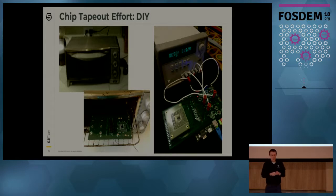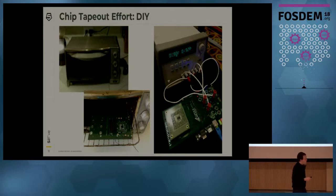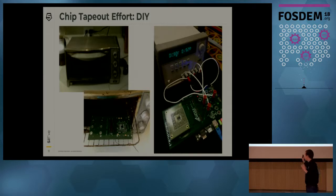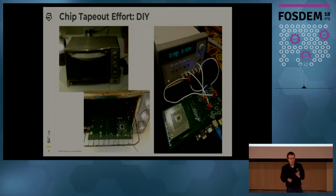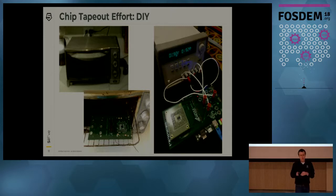You'd turn the oven up a little bit to make it hotter, and when it got too hot you'd open the door a little bit so it'd cool down. We used that to solder the board for EOS 22, which was the first implementation of the final frozen RISC-V user specification.